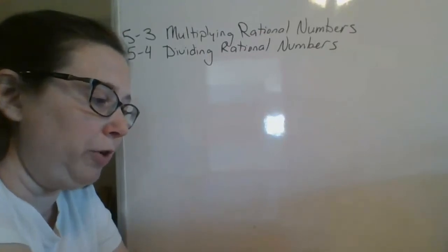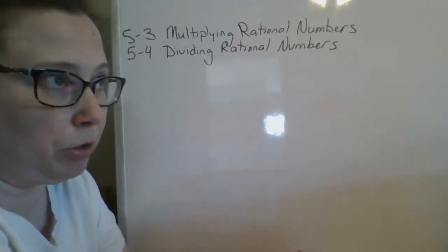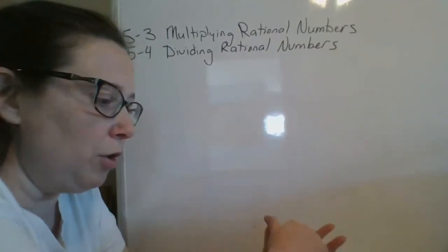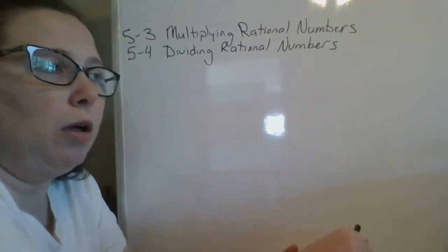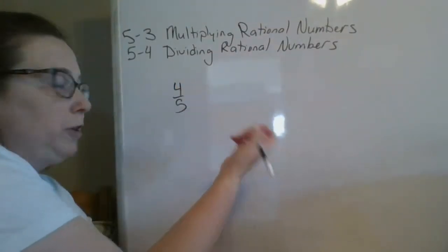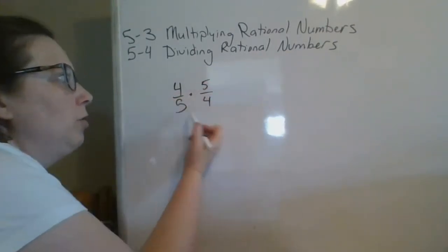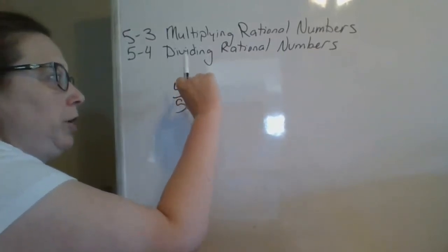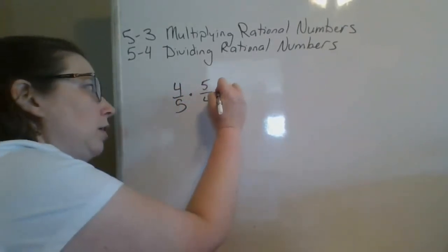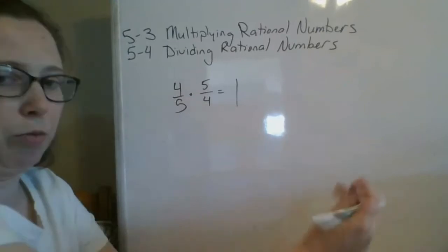Alright, so multiplicative inverses. Multiplicative inverses and reciprocals are when you have a fraction — so we have four-fifths. The multiplicative inverse, or the reciprocal, both the same thing, is essentially taking your numerator and it becomes your denominator, and your denominator becomes your numerator. I usually say you flip the fraction. What happens when you do that is you end up with 1 for your answer.